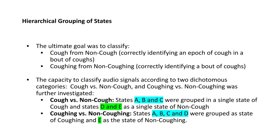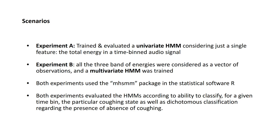The ultimate goal was to distinguish cough from non-cough. We considered two variations. First, grouping phases A, B, and C as cough and the remaining two states as non-cough. Second, classifying the entire coughing process — phases A, B, C, and D — as coughing, even though D didn't involve the sound of a cough itself, since it was in the middle of a bout. State E represented non-coughing.